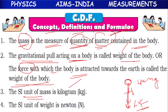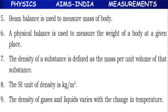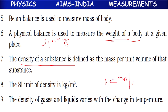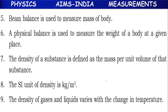SI unit of mass is kilogram (symbol: kg). SI unit of weight is Newton (symbol: N). A beam balance is used to measure the mass of the body, and a physical balance or spring balance is used to measure the weight of the body at a given place. Density means mass per unit volume. The SI unit of density is kilogram per meter cube. In the CGS system, we can write it as gram per centimeter cube.